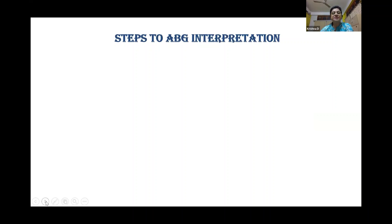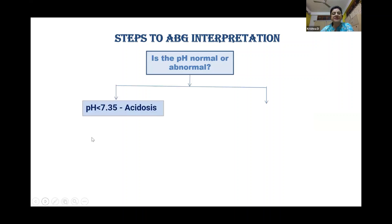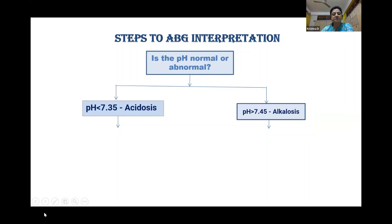Some important steps for ABG interpretation. First, we have to check whether the pH is normal or abnormal. If the value is between 7.35 to 7.45, it is normal. But if it is less than 7.35, it is acidosis. And if it is more than 7.45, it is alkalosis.